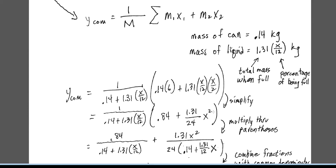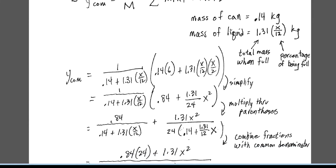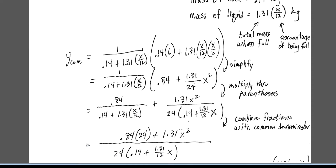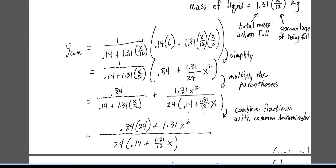We combine some terms and simplify the equation, then multiply the fraction through the parentheses. There are two terms that are similar but not identical, so we find a common denominator. Multiplying the left fraction's numerator by 24 gives them a common denominator, and we now have an expression for the location of the center of mass of the can of soda as it is emptying.